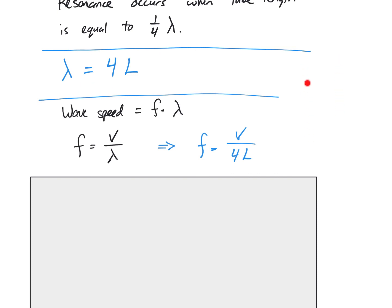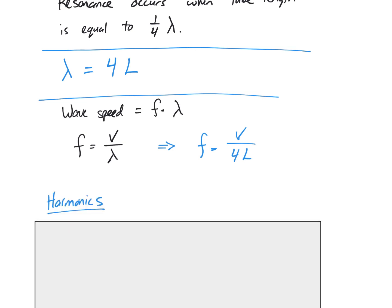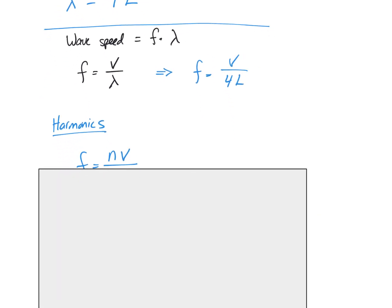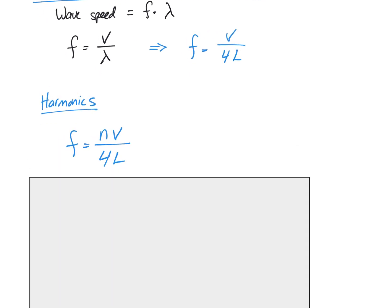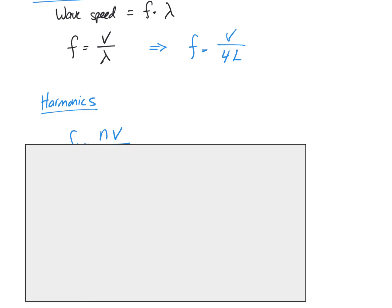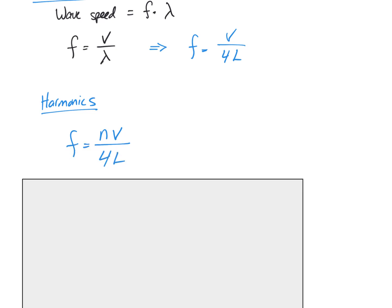Now I can just continue this idea and talk about what we see if we see a harmonic. Remember the harmonics are the different anti-nodes that we get to. So the first harmonic is one. So one times this for the speed divided by 4L, if it was the second harmonic, I would put two, two times the wave speed divided by 4L and so on and so forth.